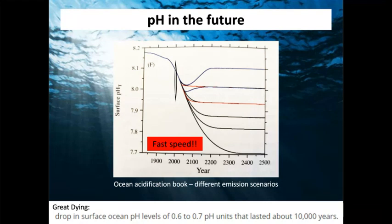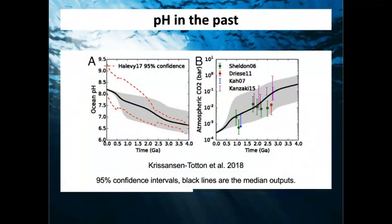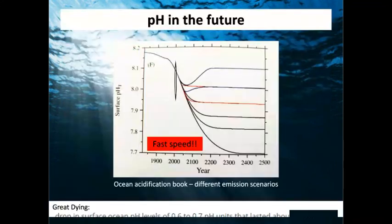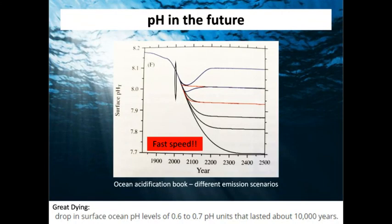Looking at the full geological record, pH has never been lower than about 6.2 and never much higher than about 9. The black oval on the graph represents where we are now, around 8.17 at the surface. What happens in the future depends on emission scenarios. The worst case — business as usual — could see pH drop to about 7.7 by 2300 to 2500.